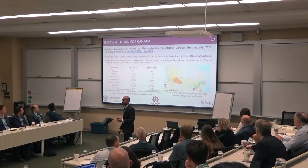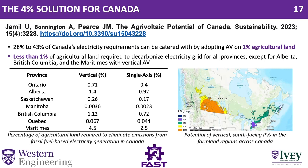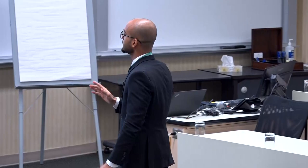The '4% solution for Canada' — another study we conducted estimated all the farmland present in Canada and its Agrivoltaic potential. If we only use 1% of agricultural land for Agrivoltaics, we can cater almost 30 to 40% of Canada's electricity needs. If we use 4% of agricultural land, we can cater the complete electricity needs of Canada through Agrivoltaics. And regarding emissions — using only 1% of farmland, we can eliminate all the emissions being generated from the electricity grid.